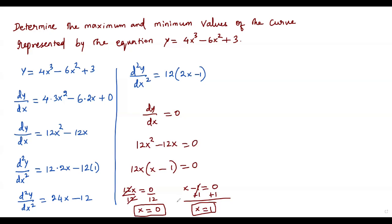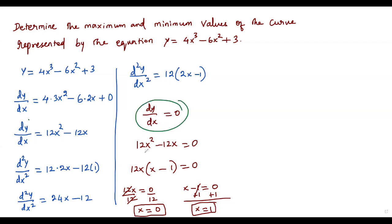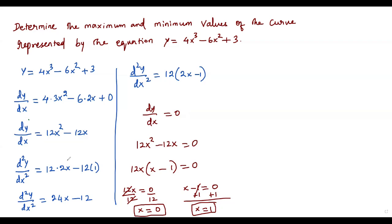Apart from these two critical numbers, we also need to check whether any value of x makes dy/dx undefined. The result of dy/dx is a polynomial, which is defined for all real values of x, so no real value makes the expression undefined. Therefore, we have only two critical numbers: x equals 0 and x equals 1.